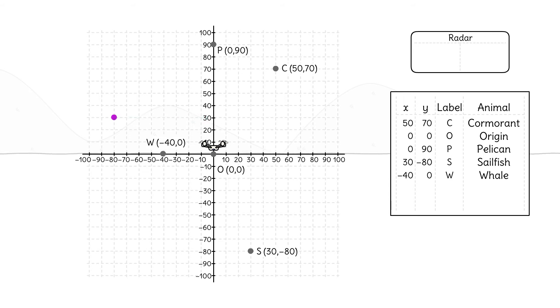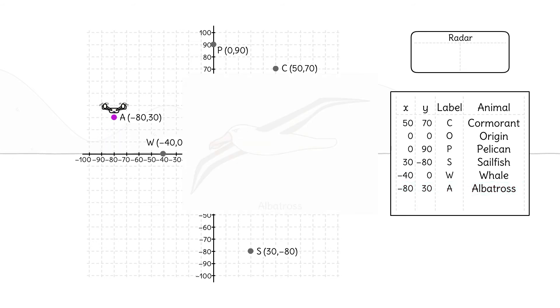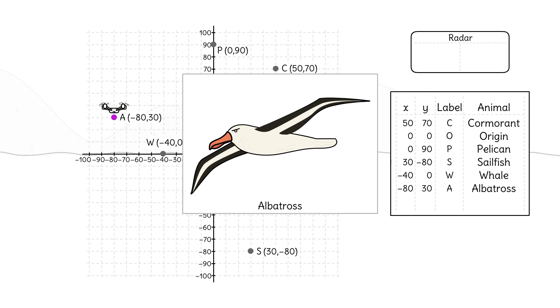So the albatross is at the point (-80, 30). The drone moves negative 80 horizontally and 30 vertically to arrive at the albatross and takes a picture.